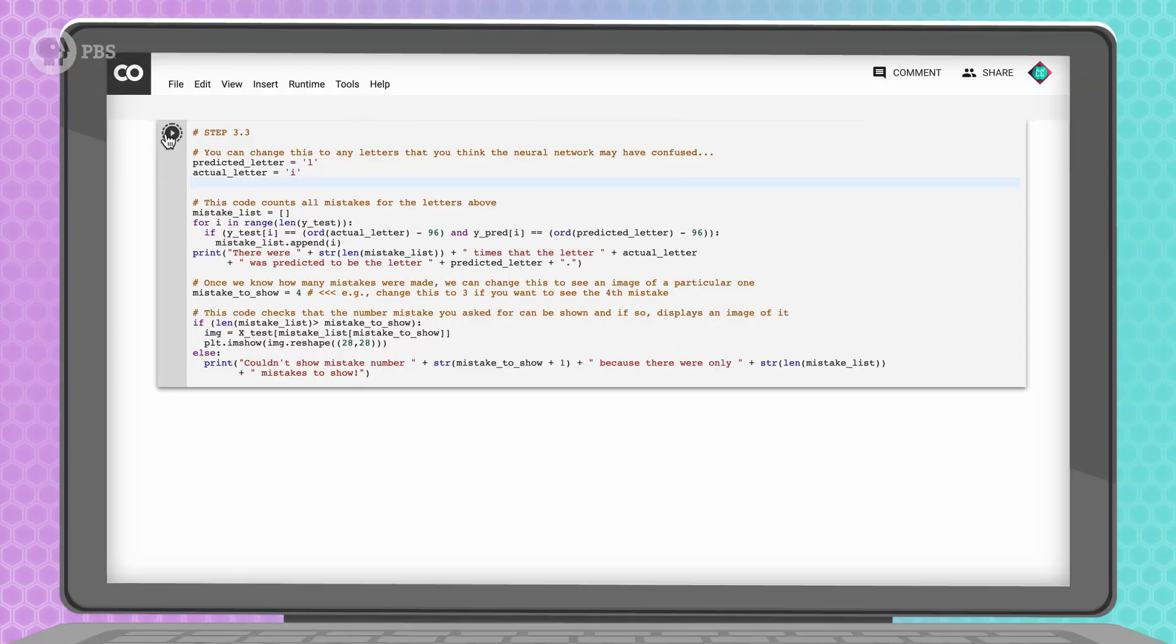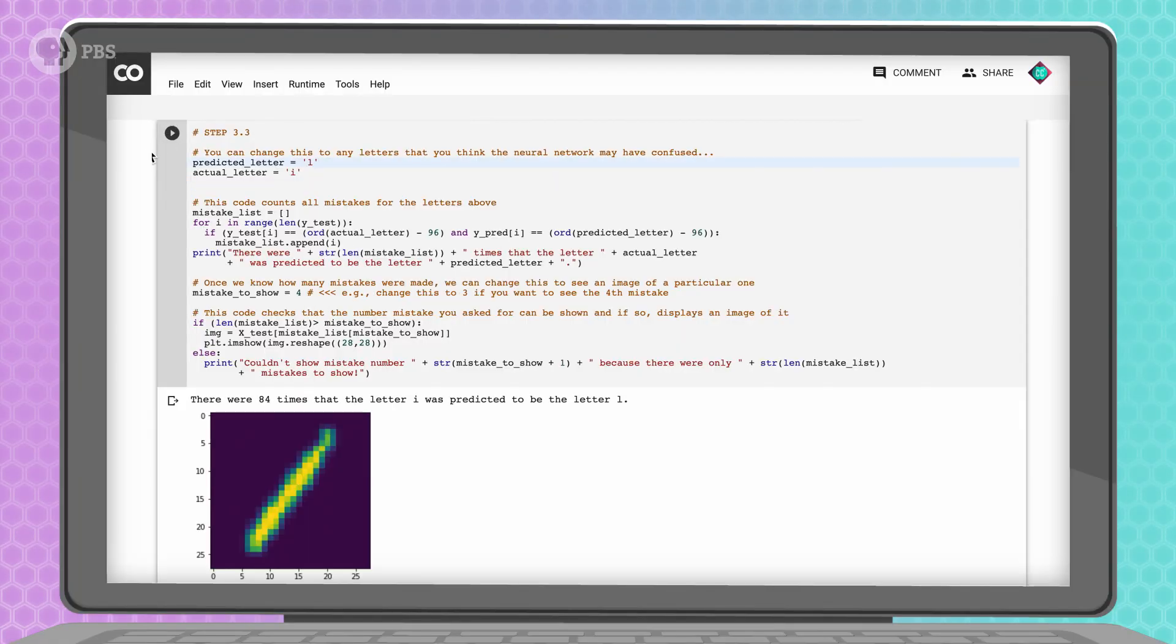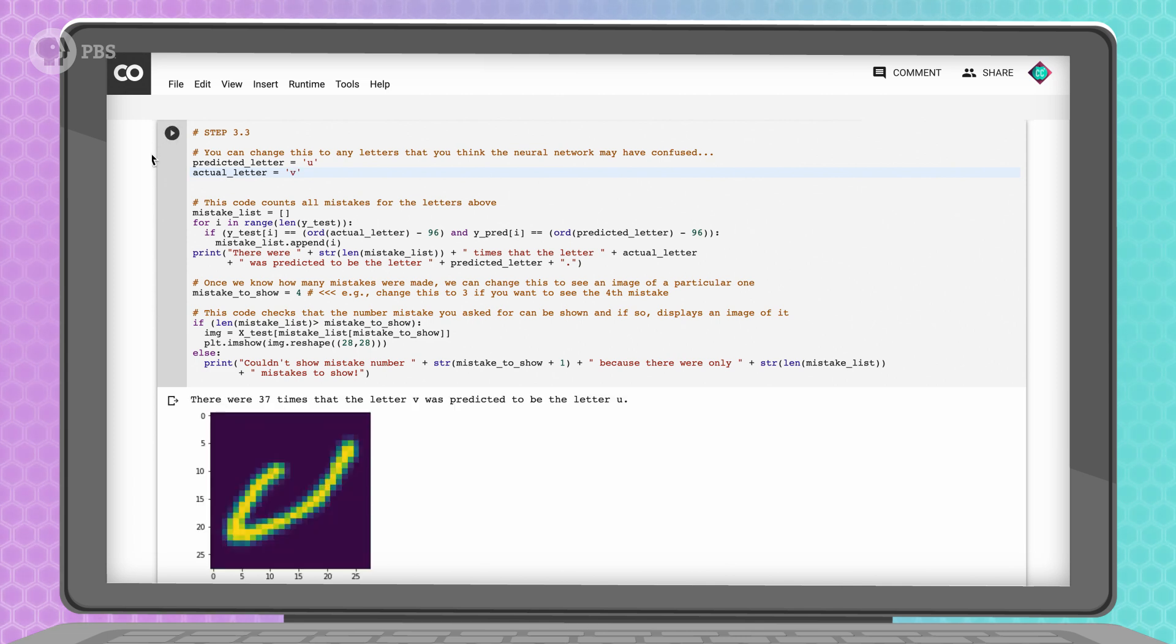So, let's look at some cases where that happened. We can also try other types of errors, like every time our network guesses that a U is a V. 37 times. To see if we can improve our accuracy, we can program a slightly different neural network. More epochs, more hidden layers, and more neurons in the hidden layers could all help. But, the trade-off is that things will be a bit slower.